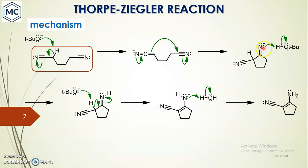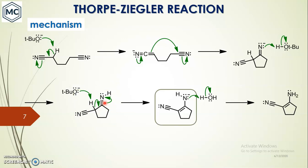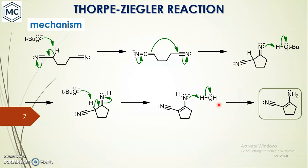A ring is formed with a C=N double bond, and this nitrogen gets a negative charge as electrons transfer from the triple bond towards the nitrogen. Of course, there is alcohol in the system, and this gets a proton from the alcohol to become an enamine. It can then undergo tautomerism to give the imine form, and on protonation from water, you finally get an enamine product.